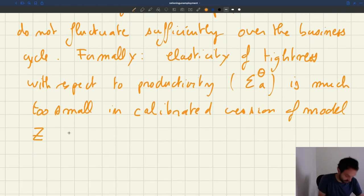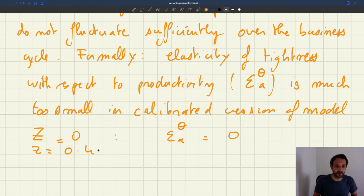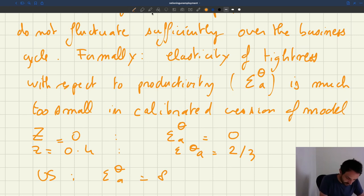For instance, if Z, the value of unemployment is 0, then ε_θA is equal to 0. If Z is equal to 0.4, which is another calibration and quite realistic, then we get ε_θA is equal to 2/3. But of course in the US, we have ε_θA is equal to 8. So the response of tightness to productivity shock is much, much larger in the US than in the calibrated version of the model.